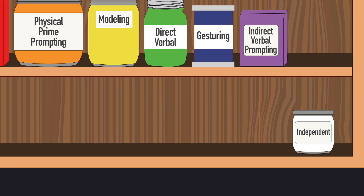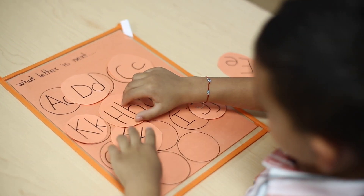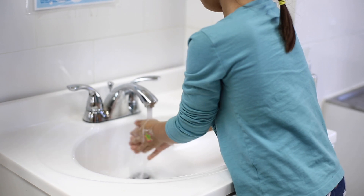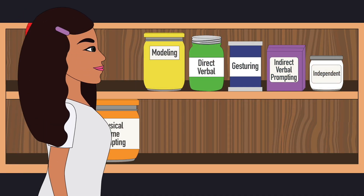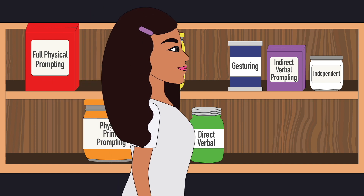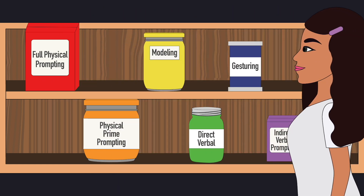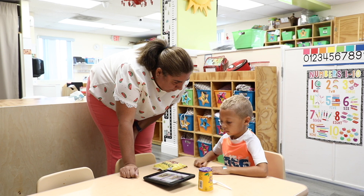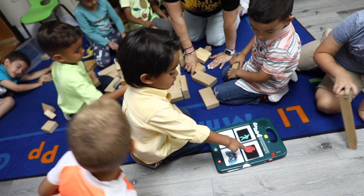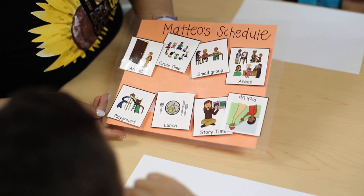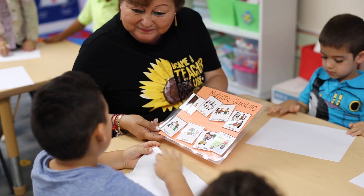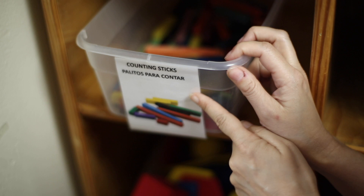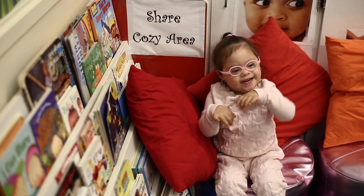Independent: the child is able to perform the task independently with no help or hints of any kind. There is no specific order when using prompts — children will need different levels depending on the activity or task. Similarly, the use of adaptive equipment or AT may help the child perform a task with less prompting required. The use of photographs, visual cues, or written text can also serve as a prompting support, especially for children with communication difficulties.